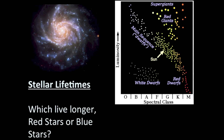Which stars live longer — red stars or blue stars? Blue stars are probably O and B main sequence stars, while red stars here means red main sequence stars, not red giants. The ones that live the longest are the lowest in mass. For main sequence stars, the lowest mass ones have the lowest luminosity and lowest temperatures — the redder main sequence stars. So red stars live the longest, which means blue stars live a shorter amount of time.